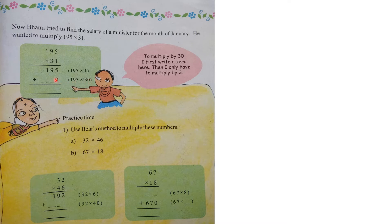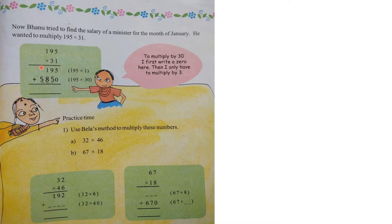Bhanu's trick for 195 × 30: since multiplying by any number ending in zero gives a zero in the units place, he writes 0 in the units place and then multiplies 195 × 3 to get 585. Now adding: 195 × 1 = 195, and 195 × 30 = 5850. Adding them: 5 + 0 = 5, 9 + 5 = 14 so write 4 carry 1, 8 + 1 + 1 = 10 so write 0 carry 1, 5 + 1 = 6. The answer is 6045.